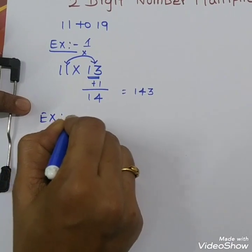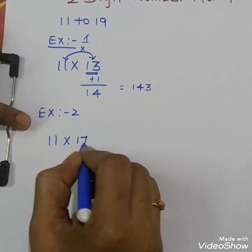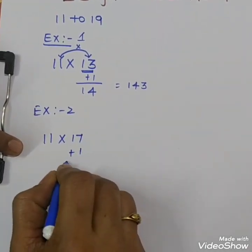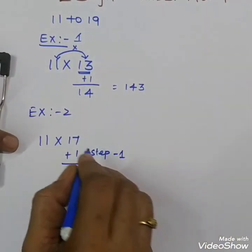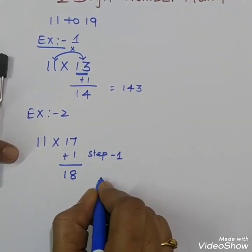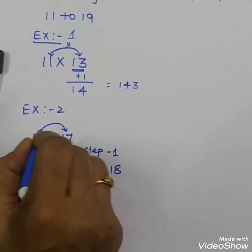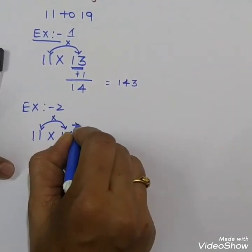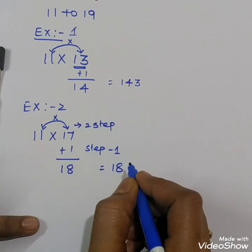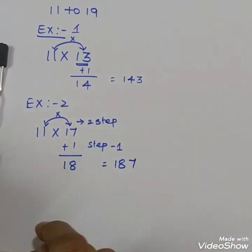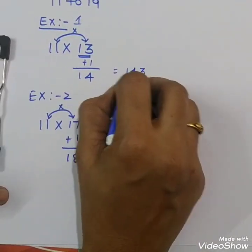Second example: 11 into 17. Step 1: add 1, which gives 18. Step 2: multiply the digits — 1 times 7 is 7. So the answer is 187.